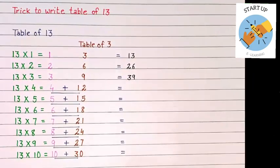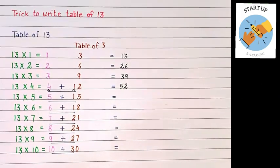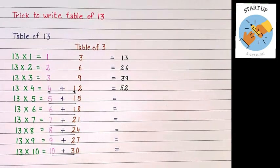Now it is written 4 plus 12. So we will add 4 plus 1, it will become 5 and we will write 2 as it is. So it will become 52.